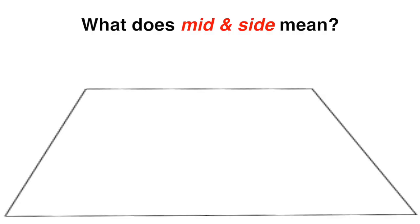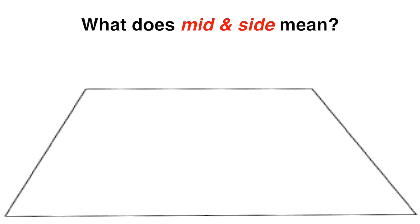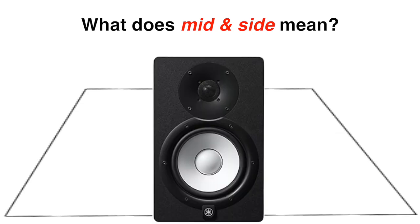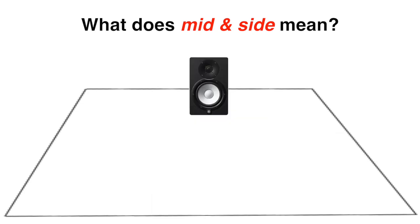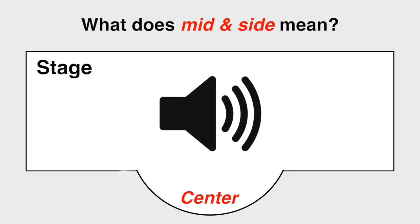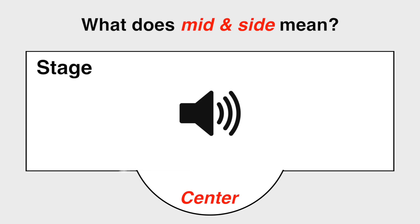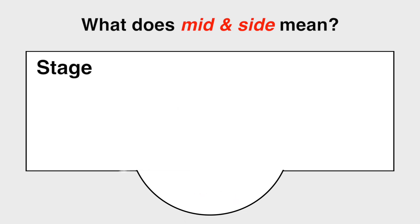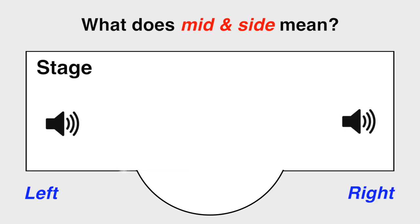Mid-side is referring to the stereo field, which is the placement of your sounds from left to right, front to back. When you mix a song, you can set your instruments wherever you want on the stage created by your listeners' speakers. The mid is referring to the mono signal, or the center of the mix — all the audio at the center of this stage. To convert a stereo signal to mono, you would sum the left and right channels together.